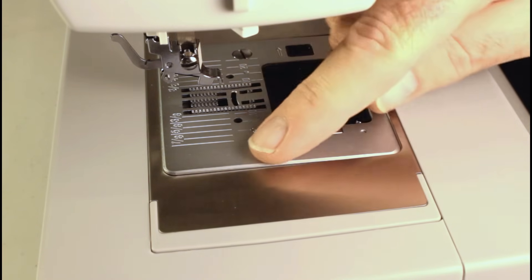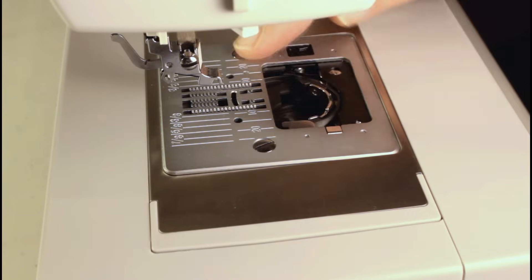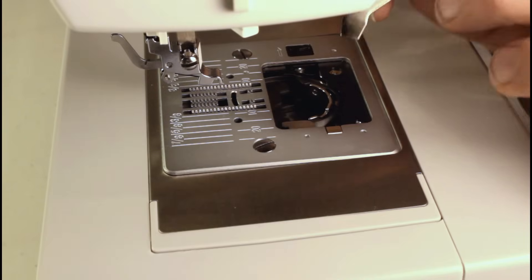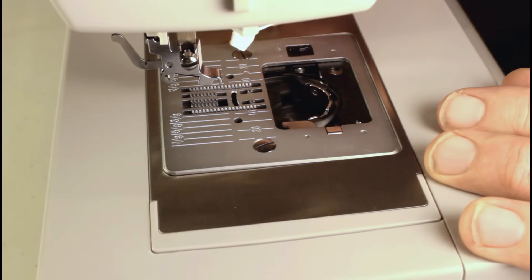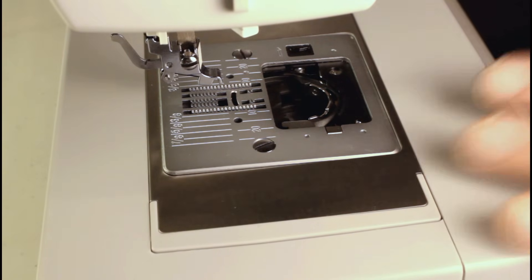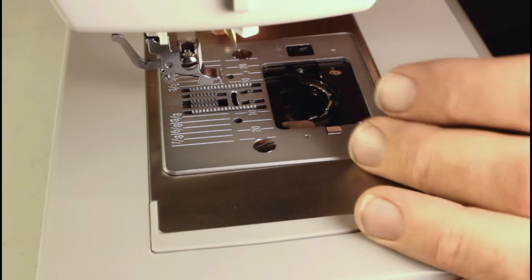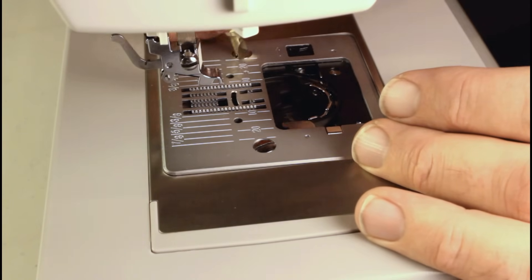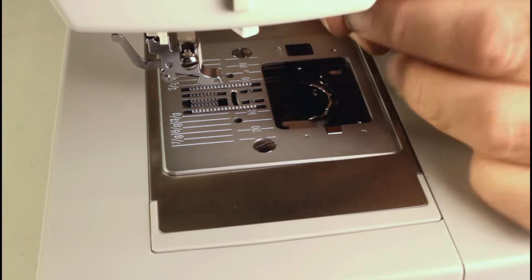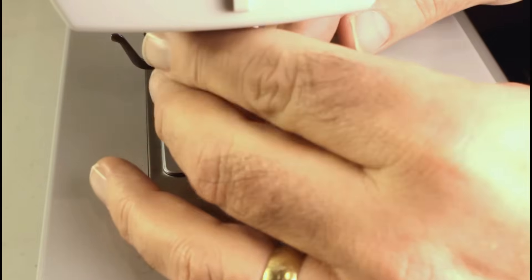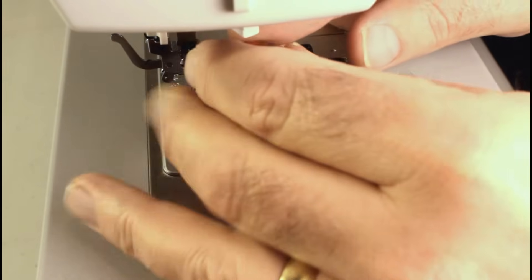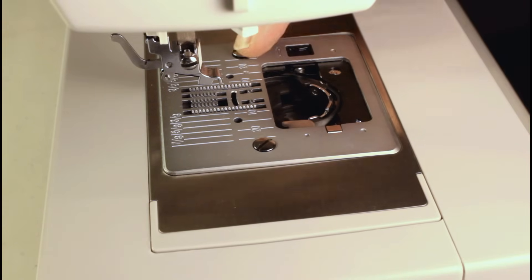And now there are two screws here on the plate that we need to remove. You've got this little tool with your machine, you can use it for what I'm going to be doing here. I've got a little screwdriver that I use. Just unscrew it, just turn it a couple of times and then you can take your finger and get the screws out.